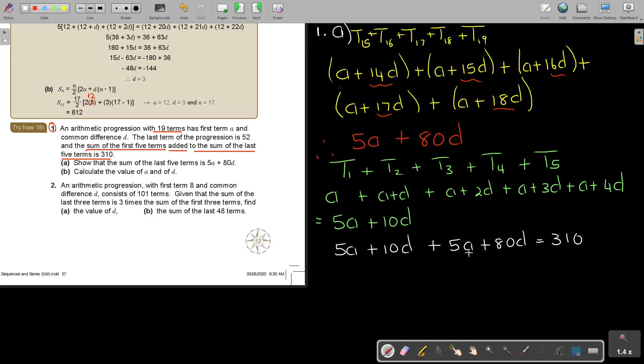It's 5A plus 5A. So that's going to be 10A plus 90D equals 310. Now, let's just see if I can simplify that. Yes, I can. So, I can make it divide by 10. It's going to be A plus 9D is 31. And that will be my equation 1.